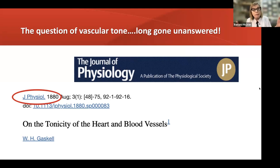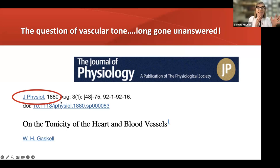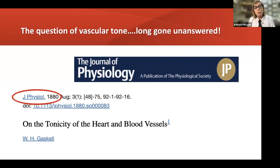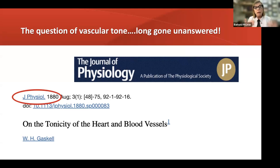This is a topic that's been around a long time. In the Journal of Physiology from 1880, on the tonicity of the heart and blood vessels, that was the first publication I could find where there was discussion about the relationship of cardiac output — most particularly stroke volume — and the tone of the vessels, and what that really meant in terms of patients' capabilities to sustain and maintain blood flow and oxygen delivery at the tissue level.